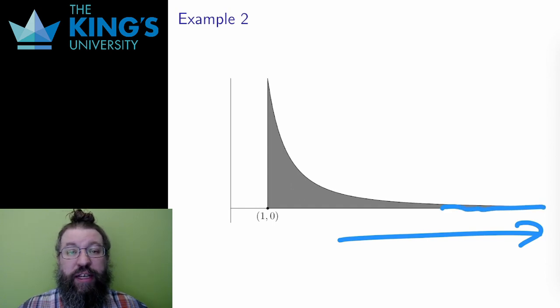The improper integral tells me that even though the domain is infinite, this area still only adds up to one single unit squared, even going all the way out to infinity. The integral converges. The area is finite.